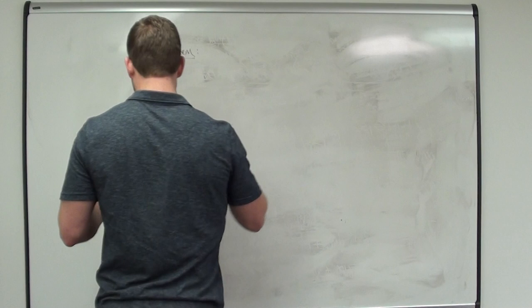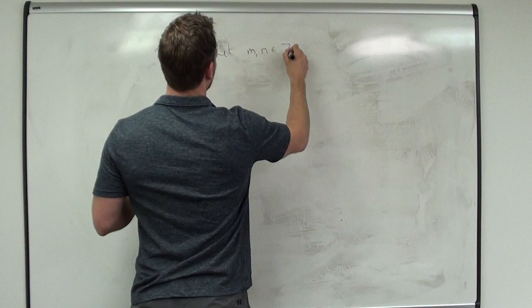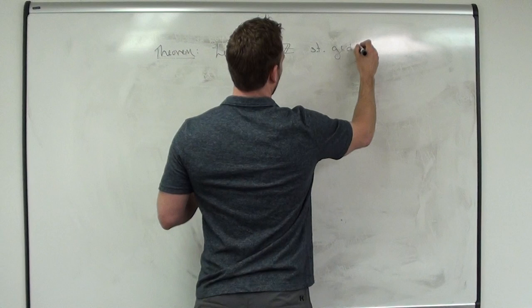So the Chinese Remainder Theorem says this: let M and N be two integers such that the GCD — so they're co-prime integers — GCD of M and N is one.